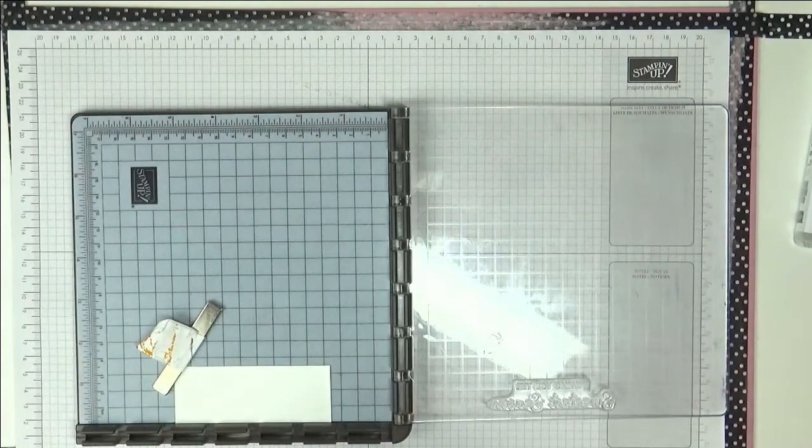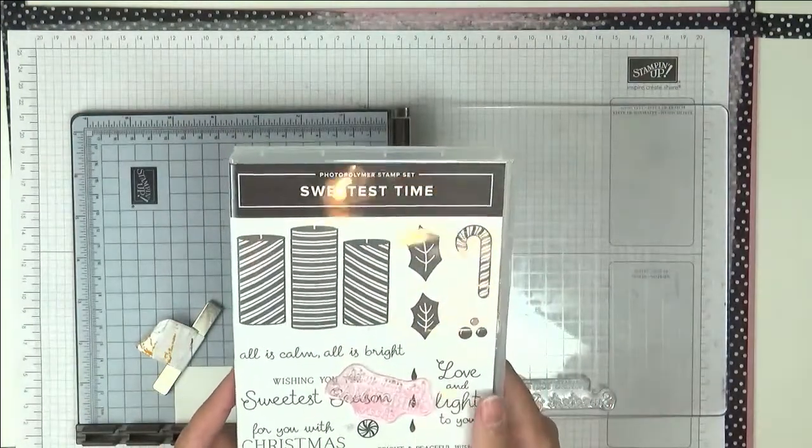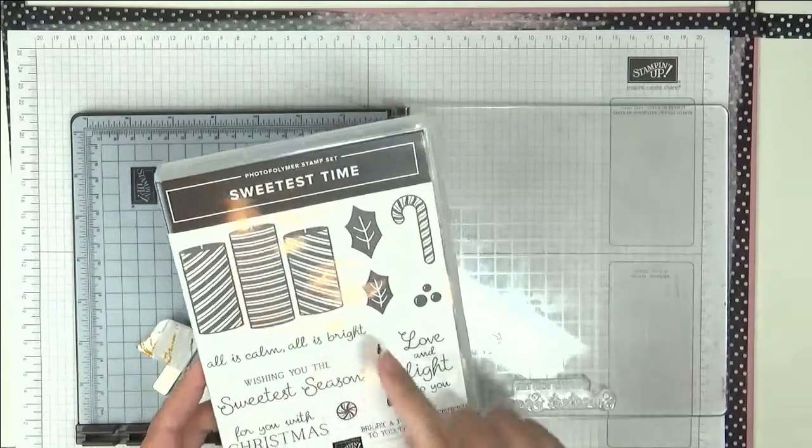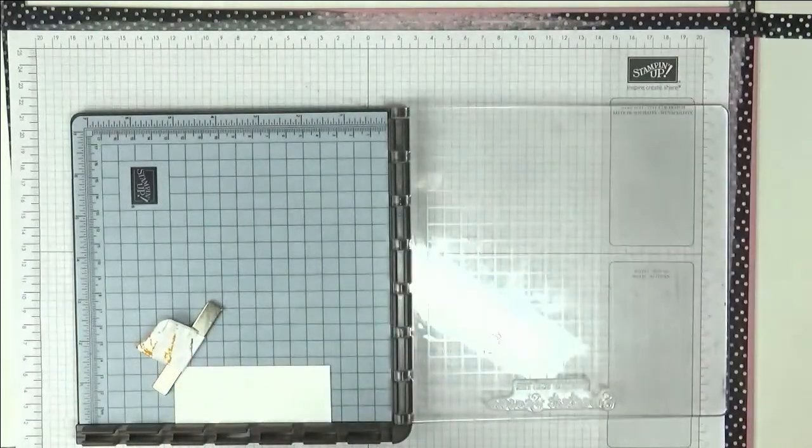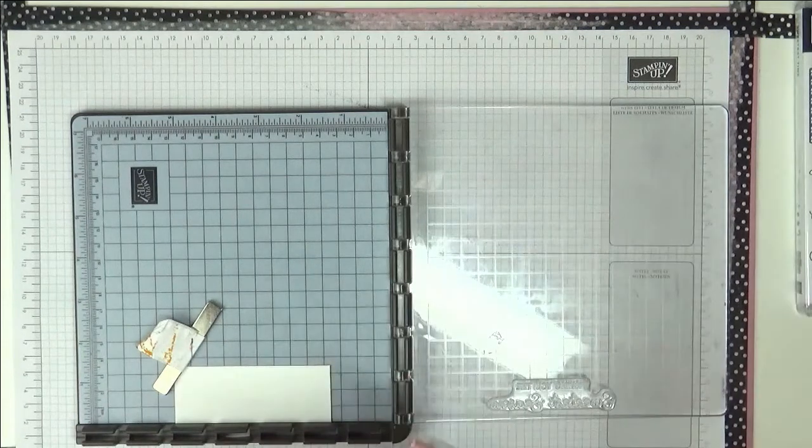I'm going to start off with the stamping. This is the Sweetest Time stamp set and we're going to use the one that says 'wishing the sweetest season' and I'm going to be stamping in Shaded Spruce.